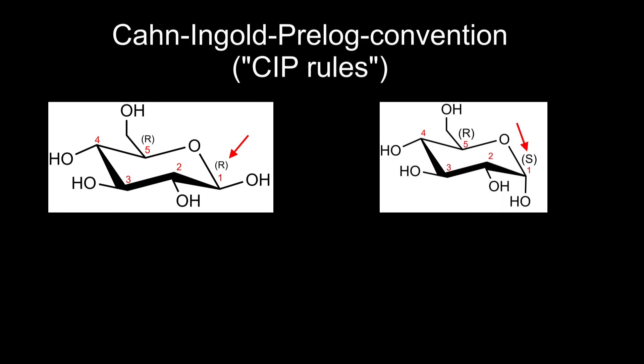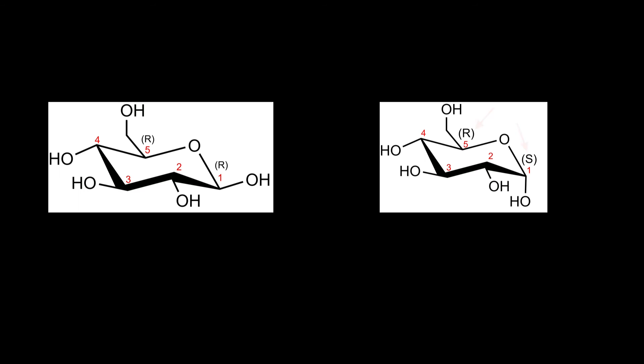This can have a configuration of R or S according to the Cahn-Ingold-Prelog convention, which is also sometimes abbreviated with CIP rules. When the anomeric carbon atom has a different configuration than the stereocenter that is the farthest away in the chain, it is called the alpha form; if not, it is called the beta form.